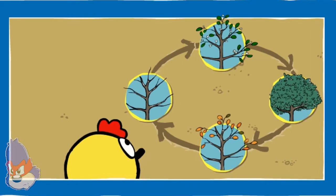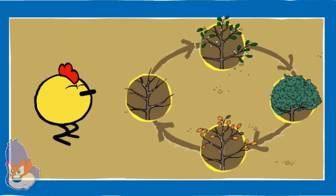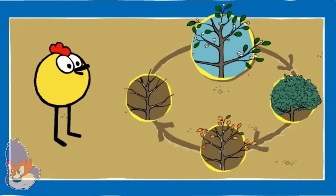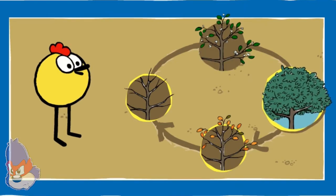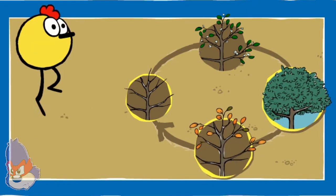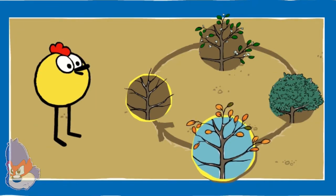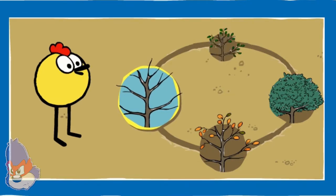Hooray! All the pictures are in the right order. This is how a beech tree changes over the year. In the spring, buds grow and blossom on tree branches. The blossoms fall off and by the summer, there are leaves on the branches. In the fall, the leaves turn different colors and fall off the tree. Finally, in the winter, the branches are bare.